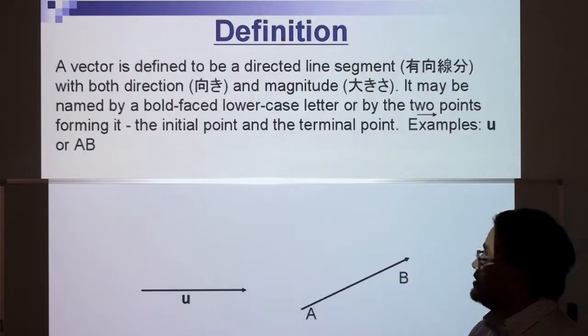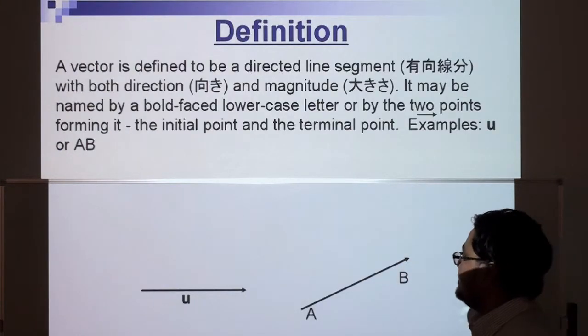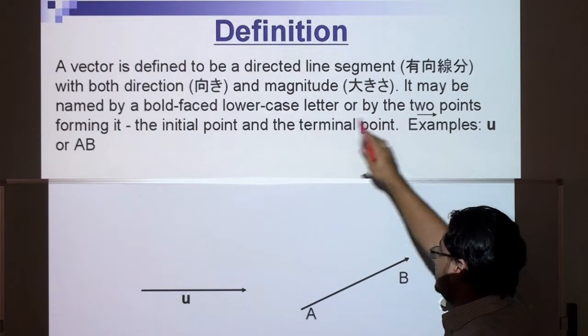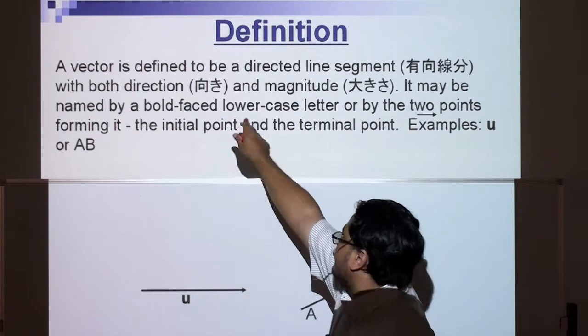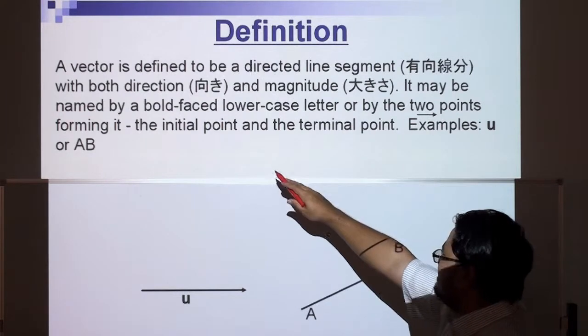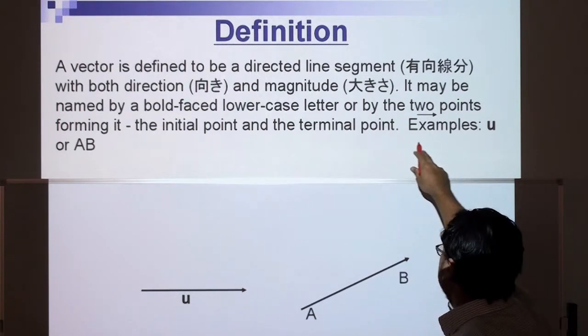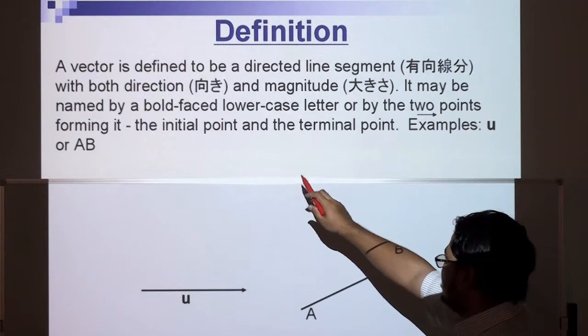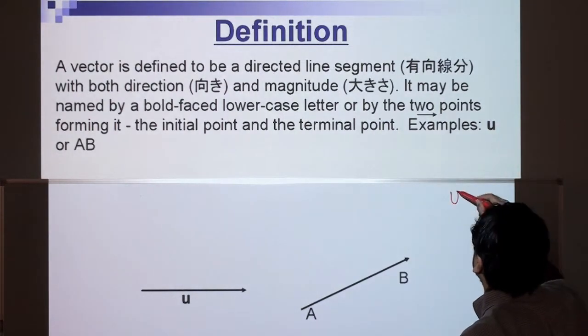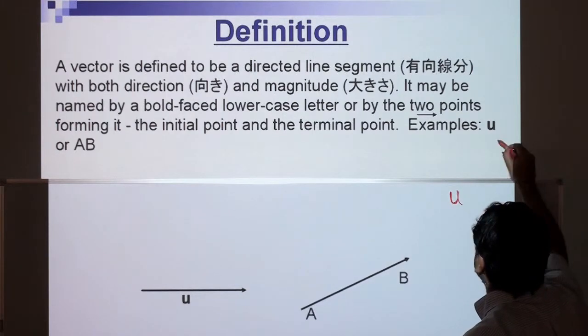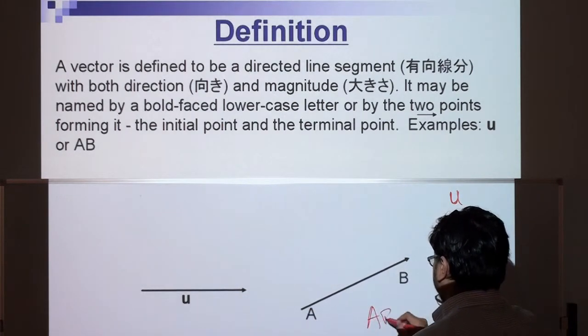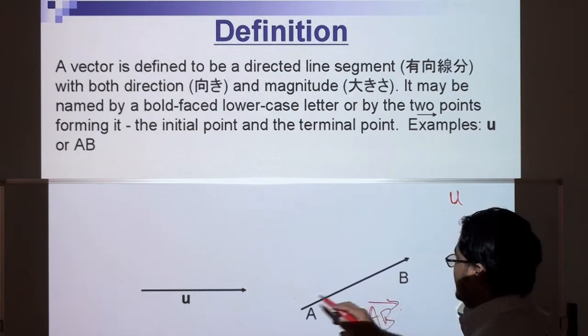Okay, so the definition of a vector: a vector is defined to be a directed line segment, so basically it has direction and magnitude. It may be named by a bold-faced lowercase letter or by the two points forming it, the initial point and the terminal point. Some vectors are written just a letter in bold, and sometimes we use AB or AB with a line on top of it.